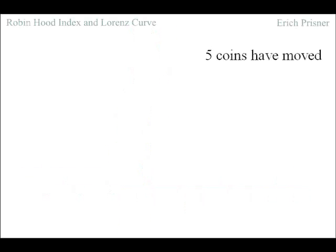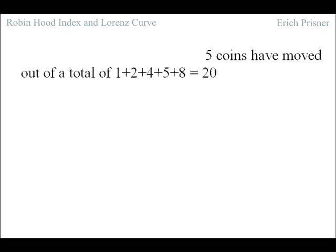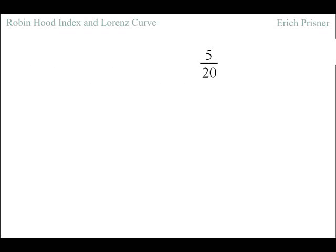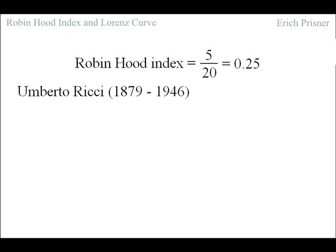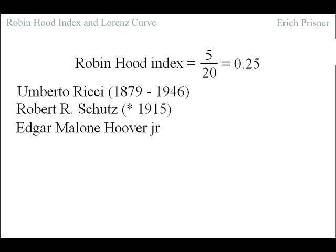5 coins have moved, have changed their owners. 5 coins out of the total of 20. This ratio 5 over 20 is called the Robin Hood index. It is also called Richie index or Schutz index or Hoover index or Pietra index or Lindell index.